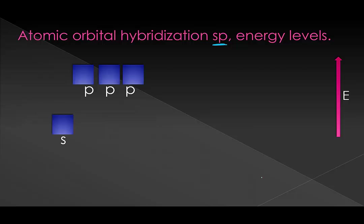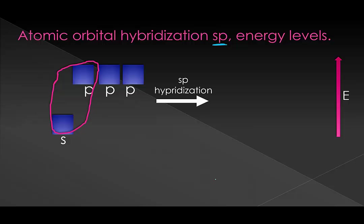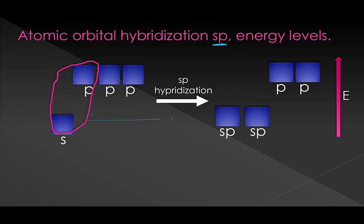Now let's talk about what sp hybridization looks like with energy levels. We draw our energy level diagrams for our valence shell. For an sp hybridization, we're taking one of our s's and one of our p's and combining those. What happens is this becomes somewhere in between an s and a p orbital — higher than an s, but lower than a p.